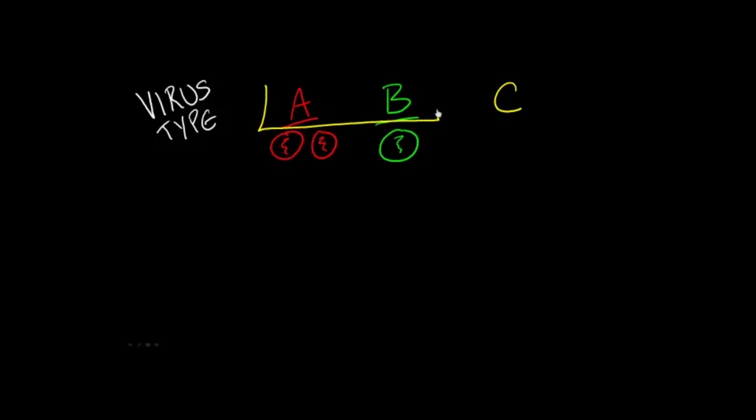So I'm focusing right now on influenza A and B viruses because these are the types that cause sickness and epidemics every winter in the United States. I'm not focusing on influenza type C because this is much less common in humans and actually isn't even included in the annual vaccine.